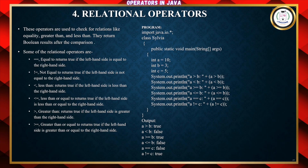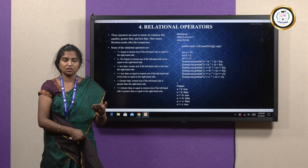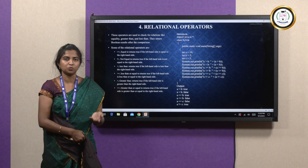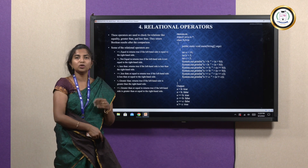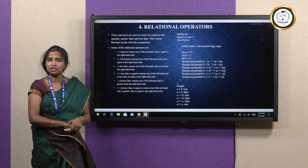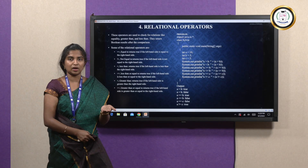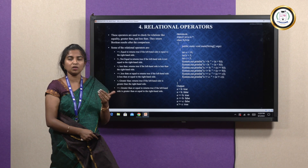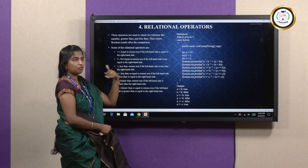Going into the fourth type — relational operators. Relational operators show the relationship between operator and operand and return a boolean value. A boolean value is either true or false, or 0 or 1. Some relational operators include double equal to (==). There is a difference between = and ==: single equal to assigns a value, while double equal to checks whether the values are the same.